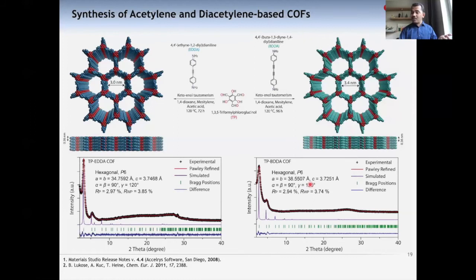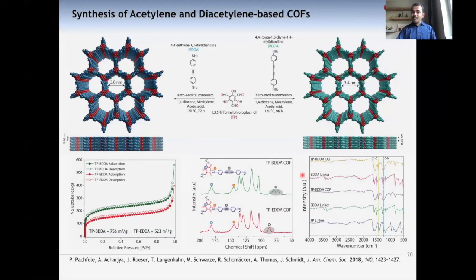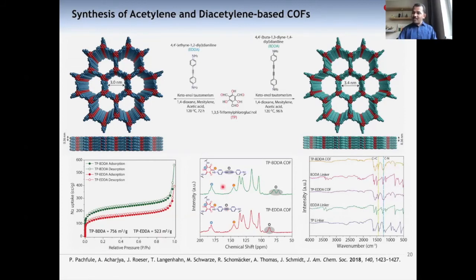PXRD analysis confirmed good crystallinity for both materials. Comparing simulated and experimental PXRD patterns confirmed formation of hexagonal P6 space group. BET surface area measurements showed TPBDDA-COF (diacetylene, 3.4 nm pores) had surface area of ~156 m²/g, while the smaller-pore TPEDA-COF showed 523 m²/g, as expected from the larger pore size. FTIR and solid-state 13C NMR analysis confirmed that acetylene and diacetylene moieties and imine bonds remained intact after synthesis and purification, confirming formation of crystalline, porous, functionalized materials.